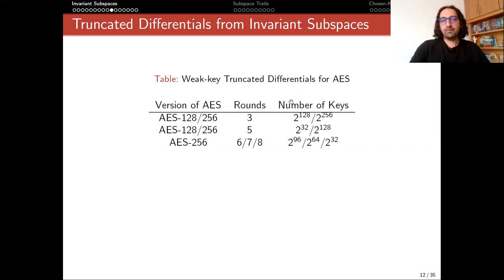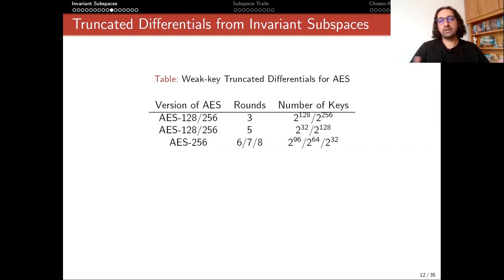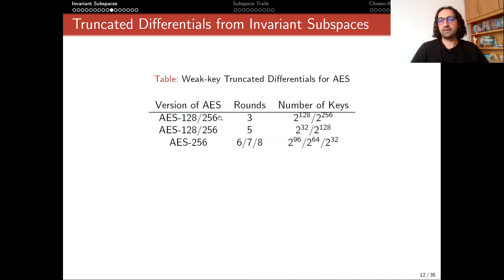For AES, there isn't any published paper, as far as I know, about truncated differentials. But once we look at the diffusion and confusion layers of the cipher, it can be seen that you can find three-round truncated differentials. These truncated differentials would be valid for all of the keys, so there is no concept of weak keys in this case.